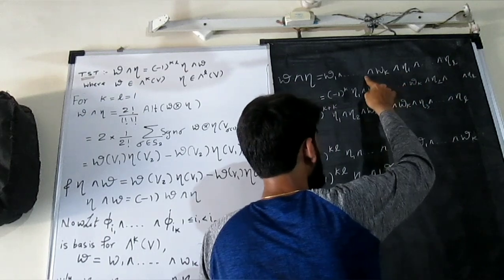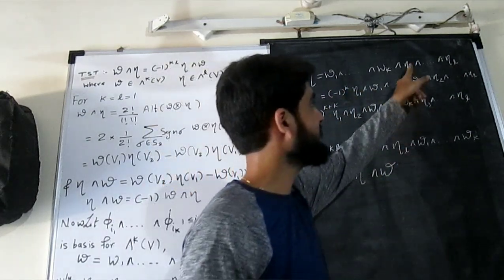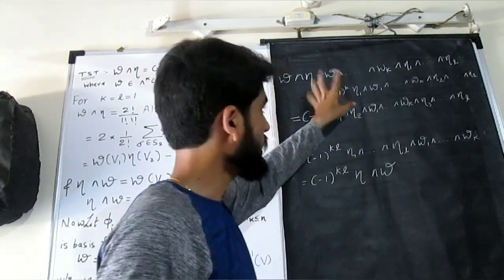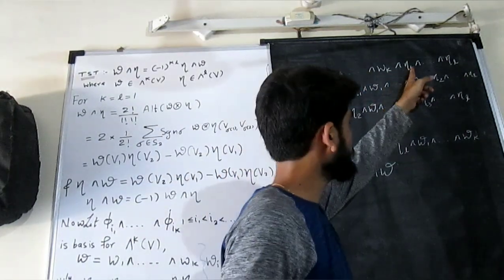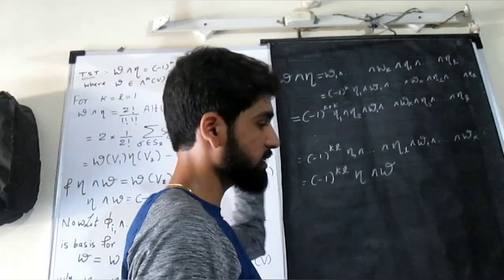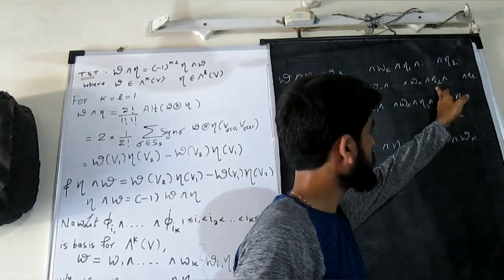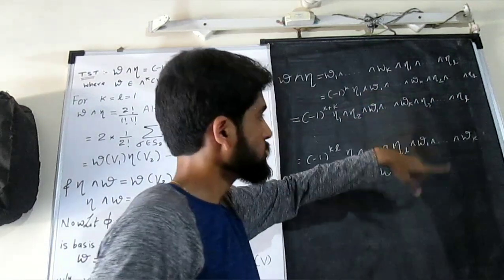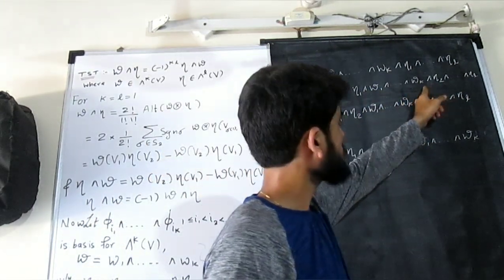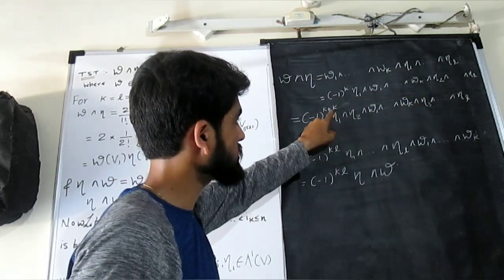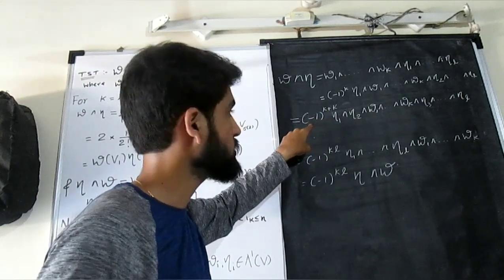Then only my eta 1 will come on the first place, so I wrote minus one raised to k, everything as it is. My eta 1 has came to first place and everything is shifted by one. Similarly, what I do is my omega 2 will come on the second place, so how many times it has to change? It has to change its place with k omegas, right? So I have added plus k to the power of minus 1.